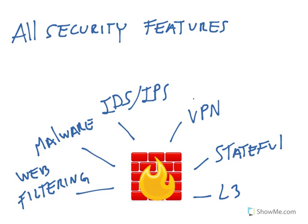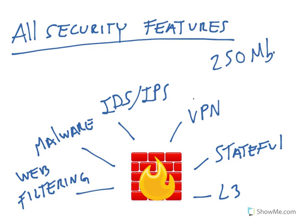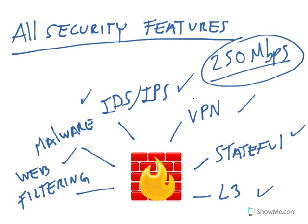Lastly, to make our lives way easier, vendors actually specify performance figures for all security features. So sometimes they might say you have 250 megabits per second with all security features — and that means layer 3 throughput, stateful, VPN, intrusion detection and prevention, malware protection, web filtering, et cetera. So if you're going to buy a firewall and turn on every single feature, then you want to look at these performance figures.